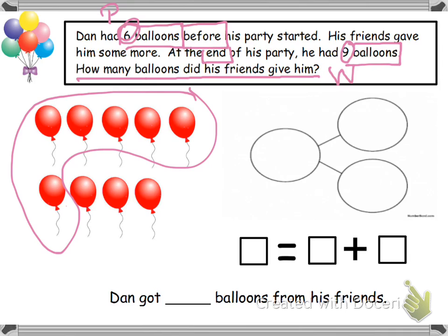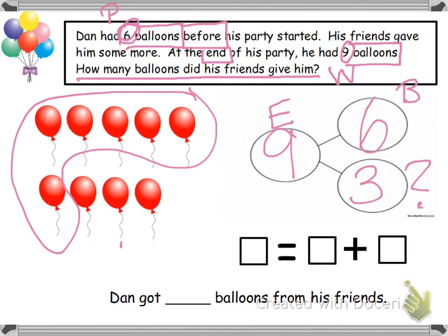And now what's left is our other part. Let's put this into our number bond. We knew that nine was our whole and six was our part. Well, how many is left? How many did we not circle? One, two, three — three is our other part. So we know that before his party started, I'm putting it right here by six. Nine was how many he had at the end of his party — I put an E for end. And three was our mystery number. That's how many his friends gave him, so that could be a G for gave.